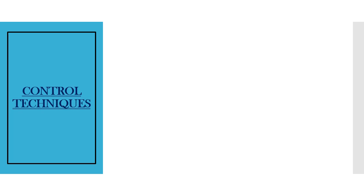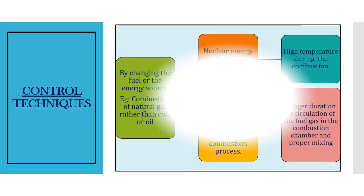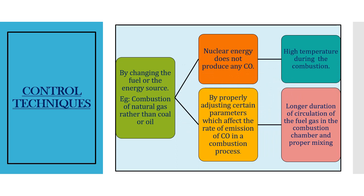How are control techniques applied with reference to carbon monoxide? Once we understand the sources of emission, we can start thinking about how to control it. The first and easiest way is to change the fuel — using natural gas rather than coal, oil, or petroleum. Natural gas does not result in carbon monoxide. Nuclear energy also doesn't produce any carbon monoxide.